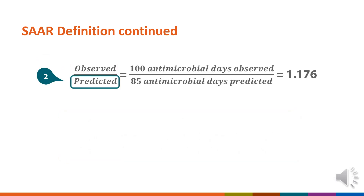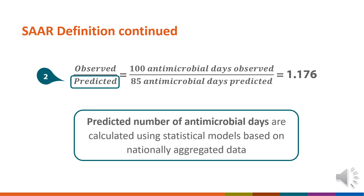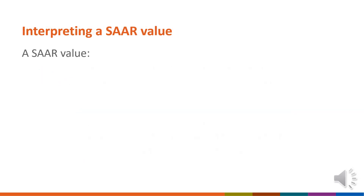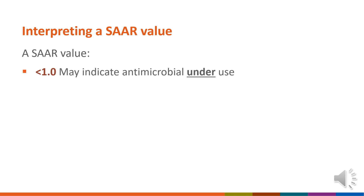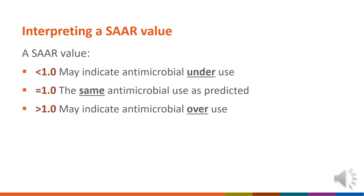The predicted antimicrobial days for that specific location are calculated using statistical models based on nationally aggregated data. These models take into account differences in hospital characteristics such as hospital size. To interpret the SAR value, consider whether the SAR is less than, equal to, or greater than 1. A SAR below 1.0 indicates less antimicrobial use than predicted and may suggest underuse. A SAR the same as 1.0 indicates antimicrobial use is equal to the referent population's use.